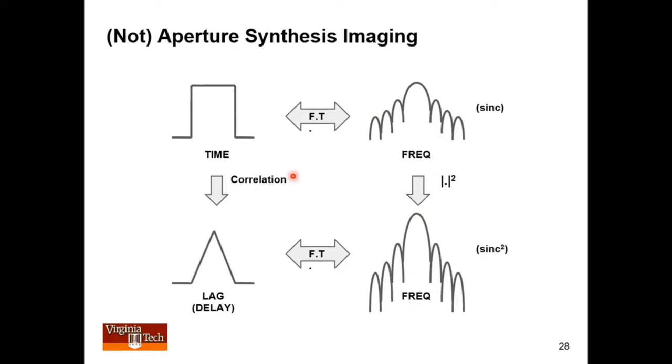So two ways to get to power spectral density. The one that most people normally think of right away, and then there's this other way where you can do correlation, get the lag spectrum, and then take the Fourier transform of that.